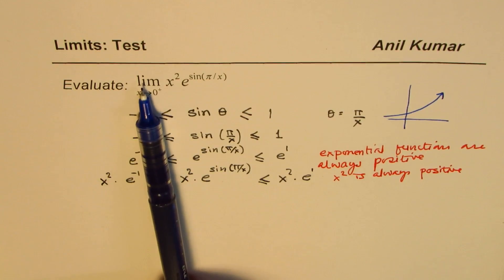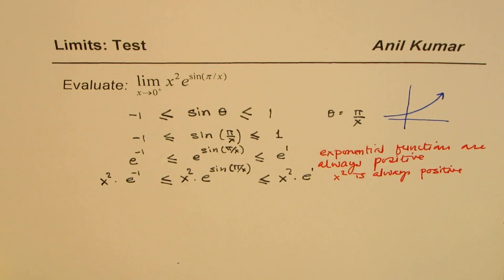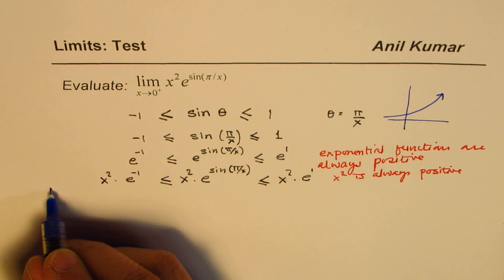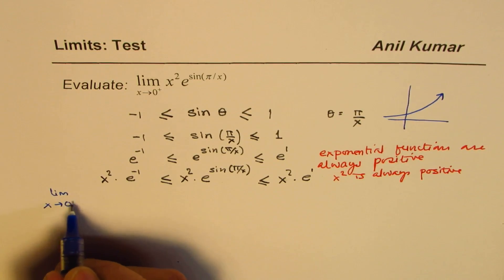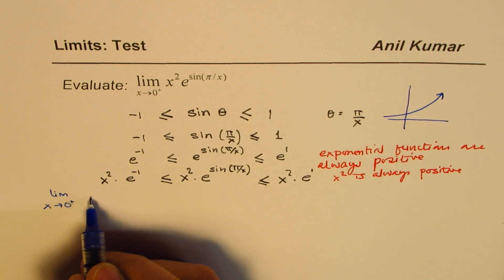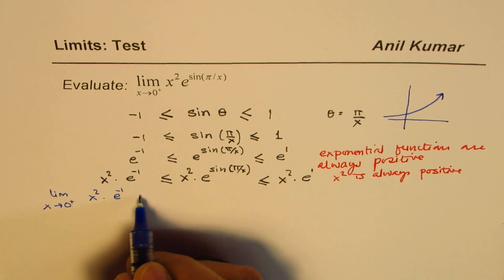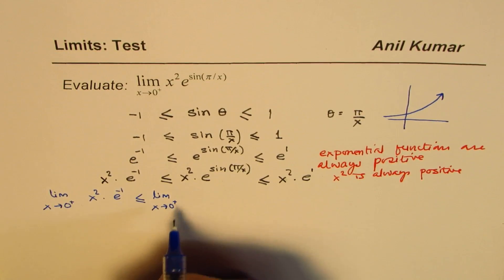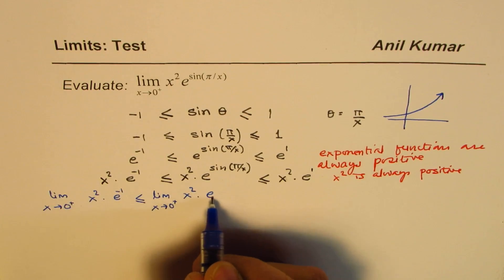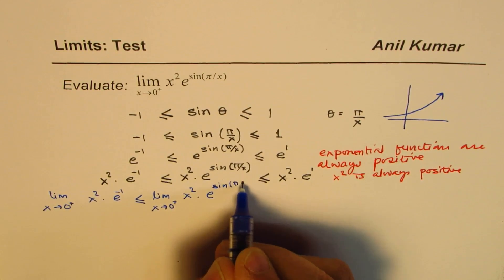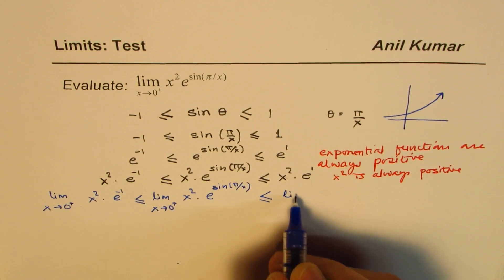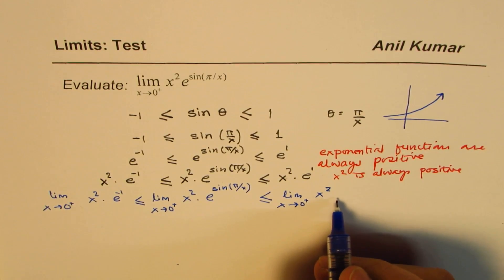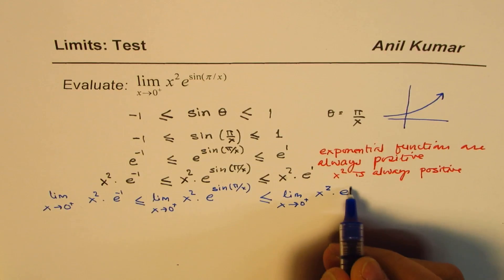Now, the question is we need to find the limit of the function in the center. So we can find the limit of the inequality. We could rewrite this as: limit x approaches 0 plus for x squared times e to the power of minus 1, which should be less than limit x approaching 0 plus for x squared e to the power of sine pi by x, and that should be less than limit x approaches 0 from positive for x squared times e to the power of 1.